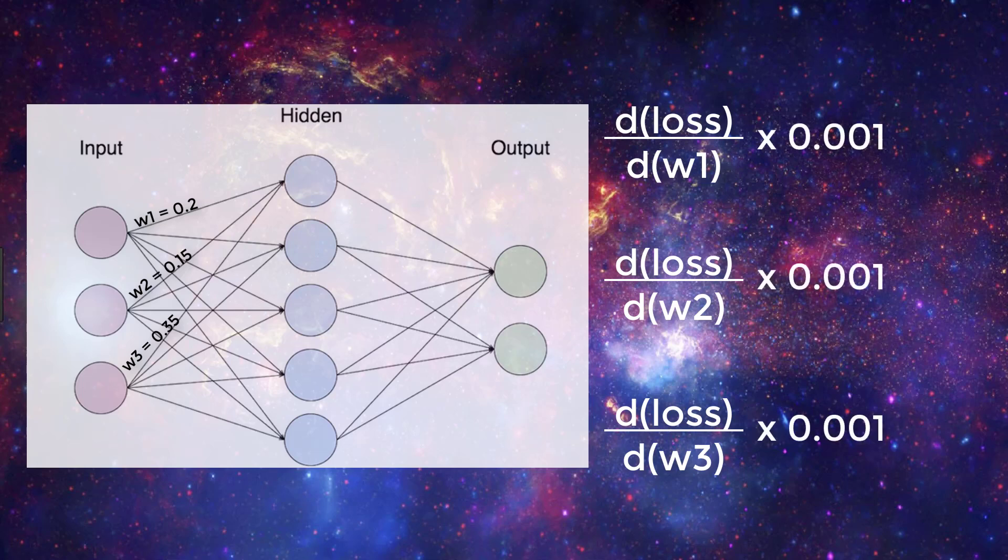This learning rate is a small number usually ranging between .01 and .0001, but the actual value can vary. So any value we get for the gradient is going to become relatively small once we multiply it by this learning rate.